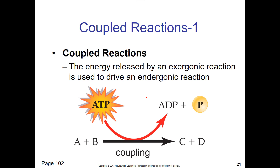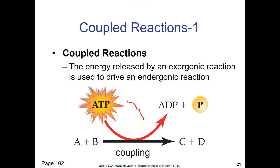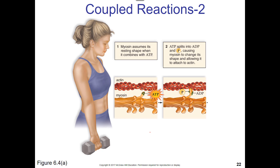Coupling: we take the exergonic reaction — the reaction that gives off energy, like ATP having its phosphate ripped off — and we put that energy into a reaction that needs it. That's coupling.